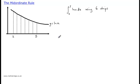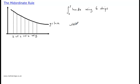Let's take a look at this example. We are trying to find the area between x equals 2 and x equals 5, underneath the curve y equals ln(x). We will use 6 strips, therefore each strip is 0.5 in length.